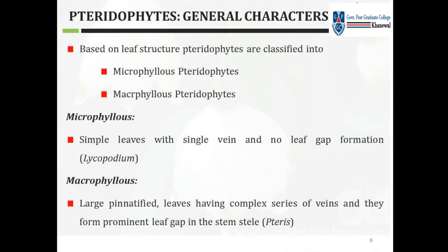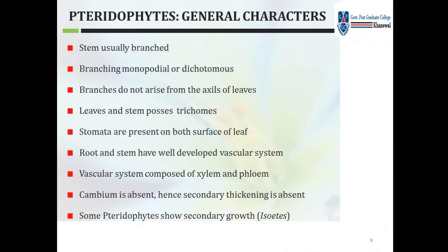The stem is usually branched — branching is monopodial or dichotomous. Branches do not arise from the axils of leaves. Leaves and stem possess trichomes. Stomata are present on both surfaces of the leaf. Roots and stems have a well-developed vascular system composed of xylem and phloem. Cambium is absent, hence secondary thickening is absent.